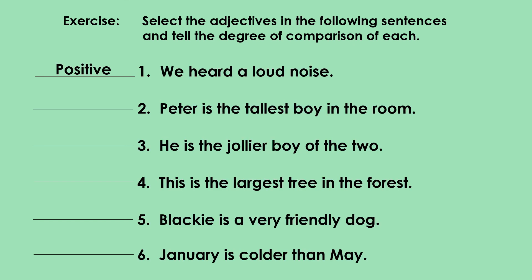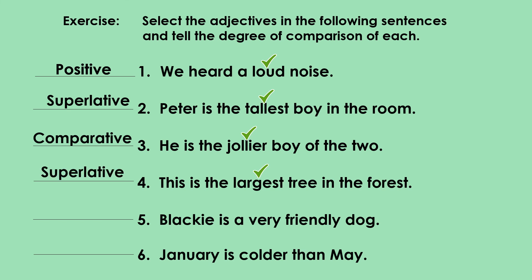Let's check your work. Number one: loud — positive. Number two: tallest — superlative. Number three: jollier — comparative. Number four: largest — superlative. Number five: friendly — positive. Number six: colder — comparative. Did you get all the correct answers?